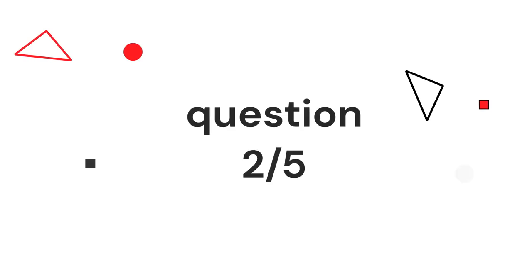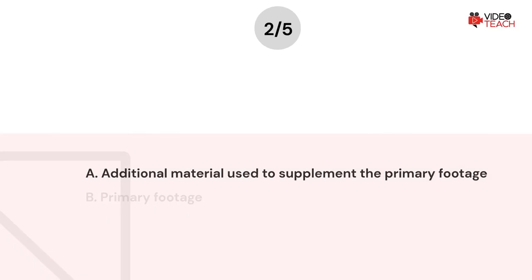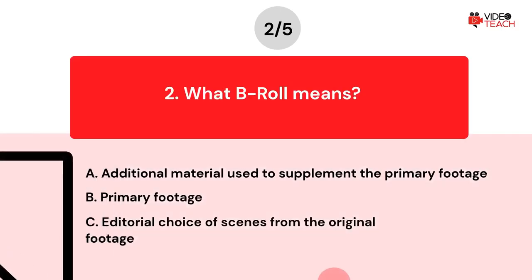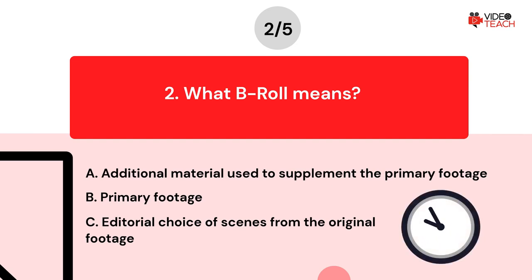Question number two: What does B-Roll mean? Option A: Additional material used to supplement the primary footage. Option B: Primary footage. Option C: Editorial choice of scenes from the original footage. Now you have about 15 seconds to think about your answer.